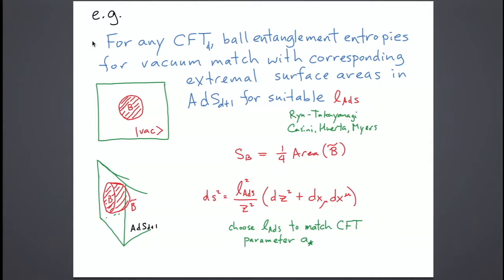The statement is that I can always find such a geometry. The only parameter I have to tune is the overall curvature scale of that geometry, and that parameter corresponds to the A* parameter in the CFT. So for any CFT I choose, I pick this curvature parameter, and once that's fixed, the entanglement entropy for any ball is just the area of that surface for the corresponding ball. This geometry summarizes all the information about the ball-shaped entanglement entropies.